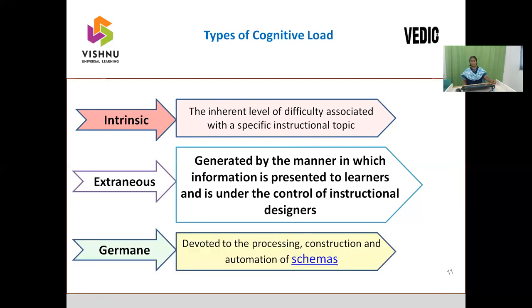Germane load is related to perceiving information and how the person starts thinking on the information, inducting, deducing, concluding, and deriving new things — providing solutions from the perception of information. All of this constitutes one single schema. The final confirmation upon the information received by the learner is said to be schemas. In long-term memory, all the information observed by the learner will be available in the form of schemas.